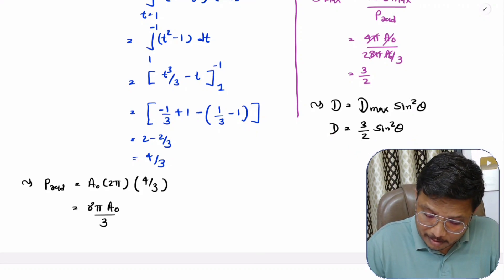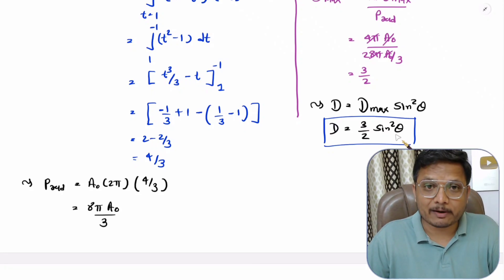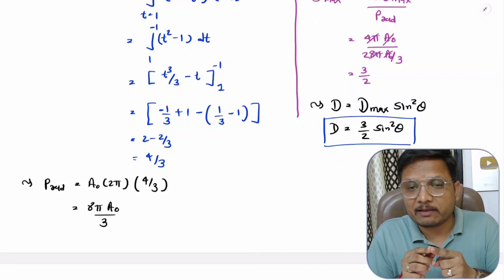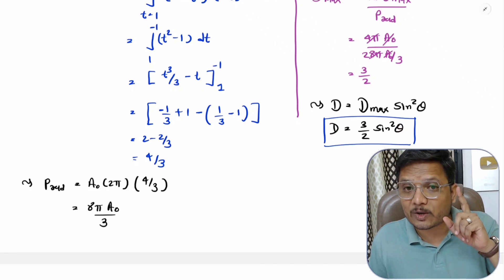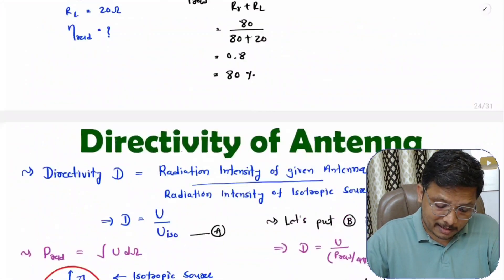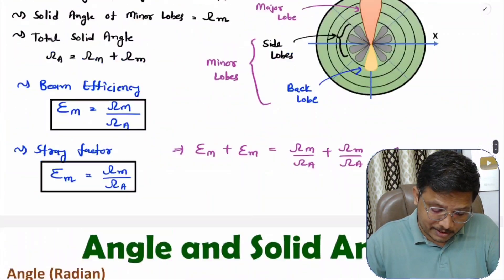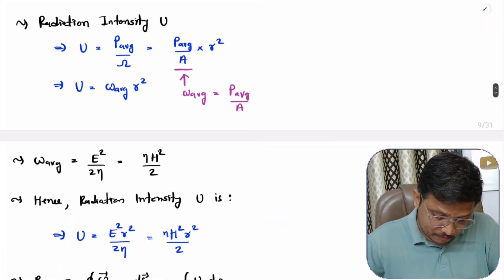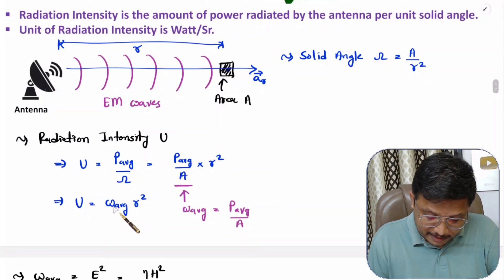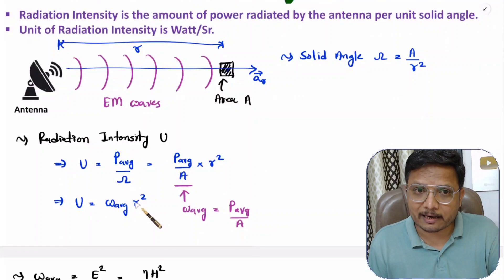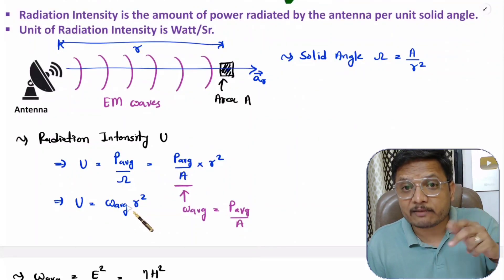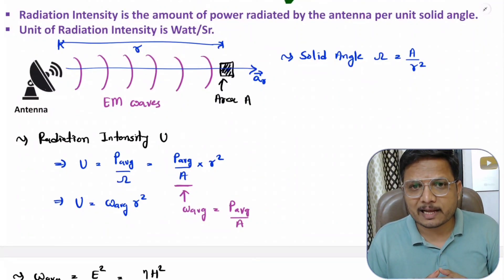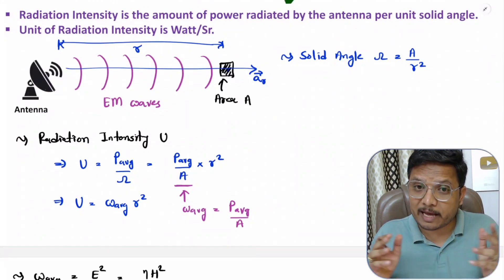That is how we calculate directivity with respect to angle. You should be clear about directivity in terms of radiation intensity. Radiation intensity has a direct relation with radiated power, and radiation intensity equals average power density times R². From radiation intensity, we calculate directivity. If anything is unclear, please note it in the comment section — I will be happy to help. Thank you so much for watching.